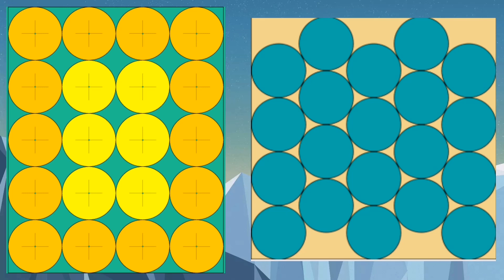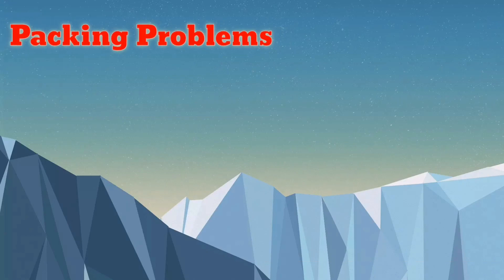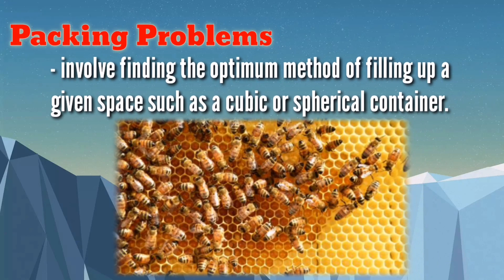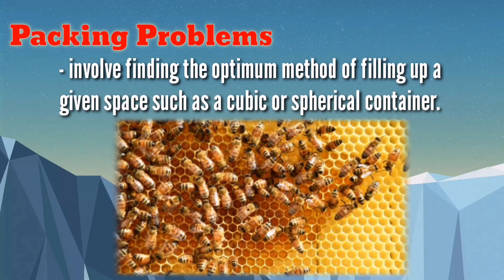Translating this idea to three-dimensional space, we can conclude that hexagonal formations are more optimal in making use of the available space. These are referred to as packing problems. Packing problems involve finding the optimum method of filling up a given space, such as a cubic or spherical container. The bees have instinctively found the best solution, evident in the hexagonal construction of their hives. These geometric patterns are not only simple and beautiful, but also optimally functional.